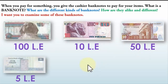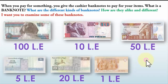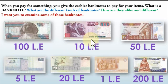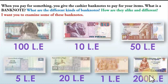We also have 5 pounds, 20 pounds, 1 pound, and 200 pounds. If I want to arrange these banknotes by value ascending, we start with 1 pound, less than 5 pounds, less than 10 pounds, less than 20 pounds, less than 50 pounds, less than 100 pounds, less than 200 pounds. The smallest banknote is 1 pound and the greatest is 200 pounds.